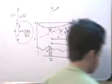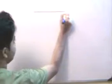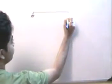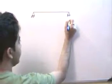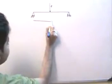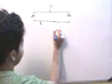Now we are going to take one example and solve it using moment area theory. Let's say we have a simply supported beam with a load at the center. This distance is L/2 and this distance is L/2.